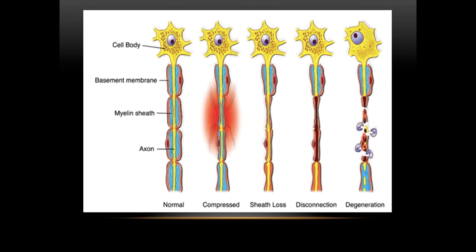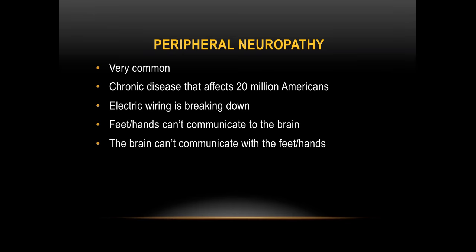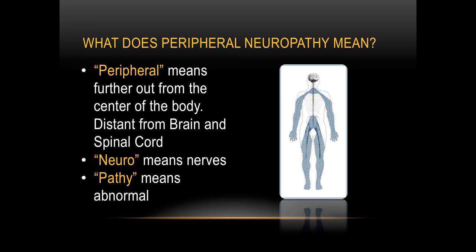If you do have myelin sheath loss, once it deteriorates or degenerates, it does not grow back. Then you have issues where the nerve just does not communicate properly, so you get mixed signals. Probably the most common is just degeneration, which is a normal process of aging, but I do believe it can be minimized. Peripheral neuropathy is extremely common — it's estimated that about 20 million Americans suffer from this, and I believe this estimate is low because many people just don't see their doctor. By definition, peripheral means out from the center of the body — away from the brain and spinal cord. Neuro means nerves and pathy means abnormal, so it's abnormal nerve flow away from the brain and spinal cord.